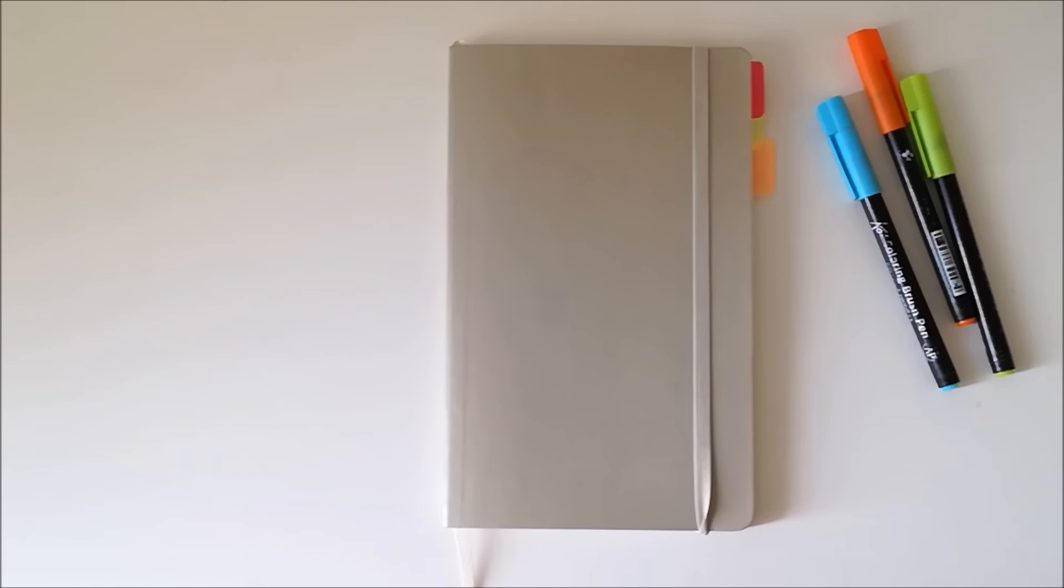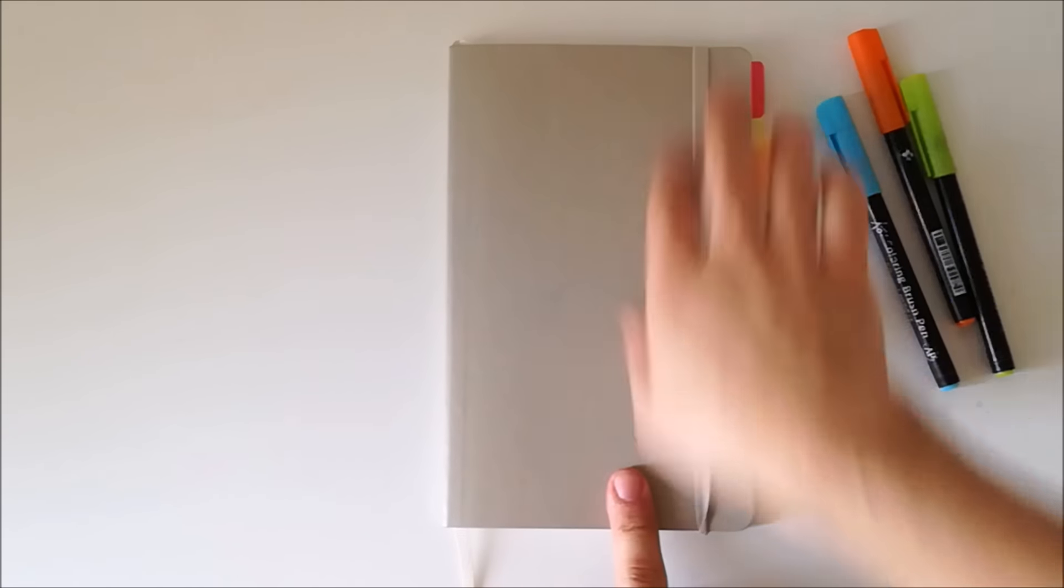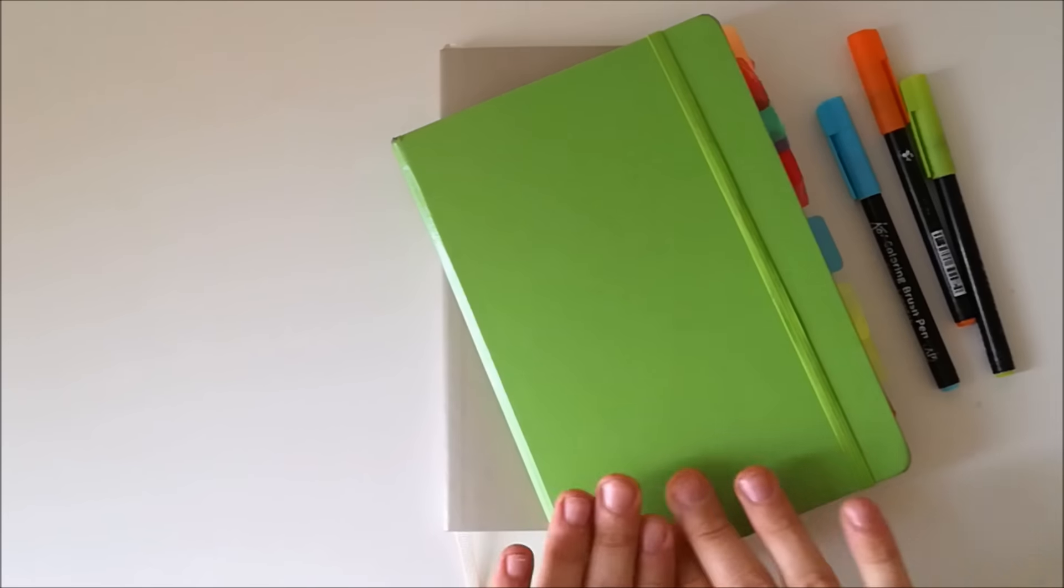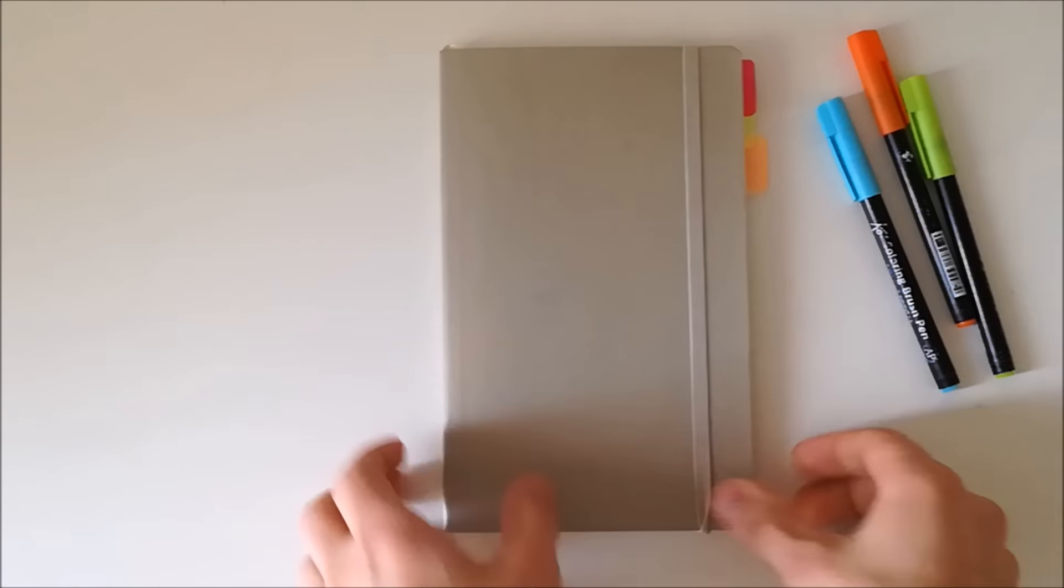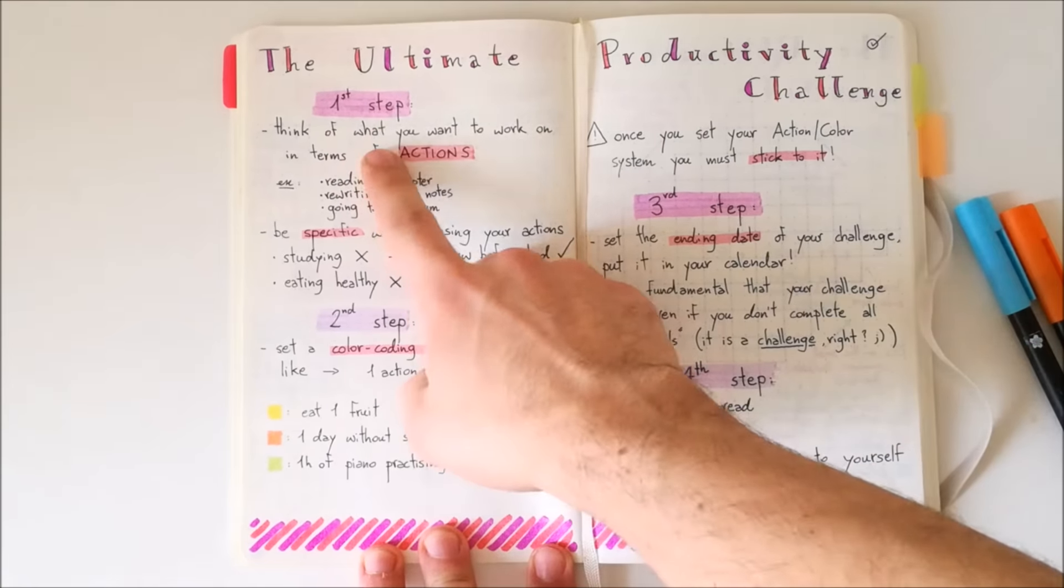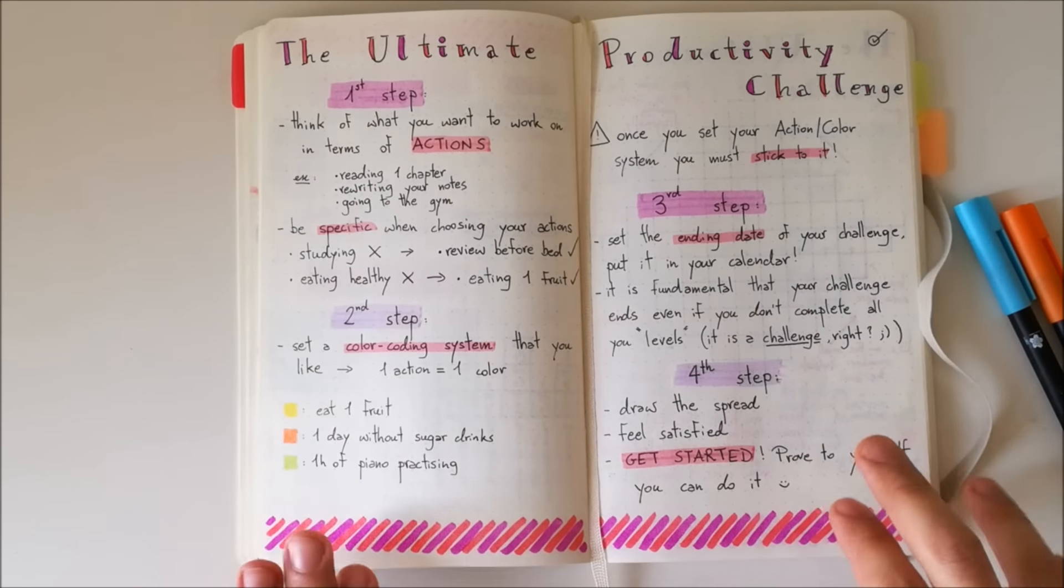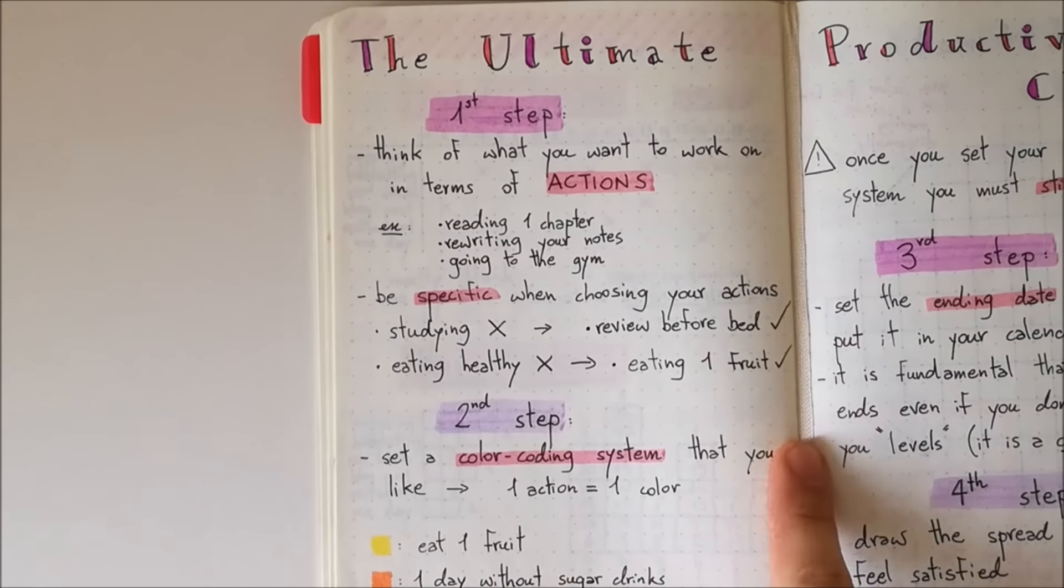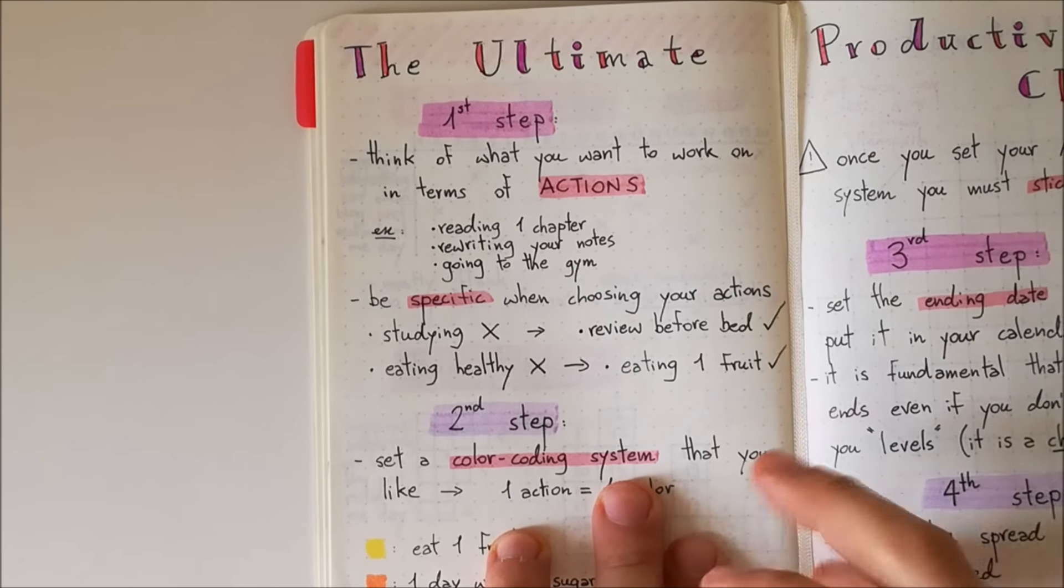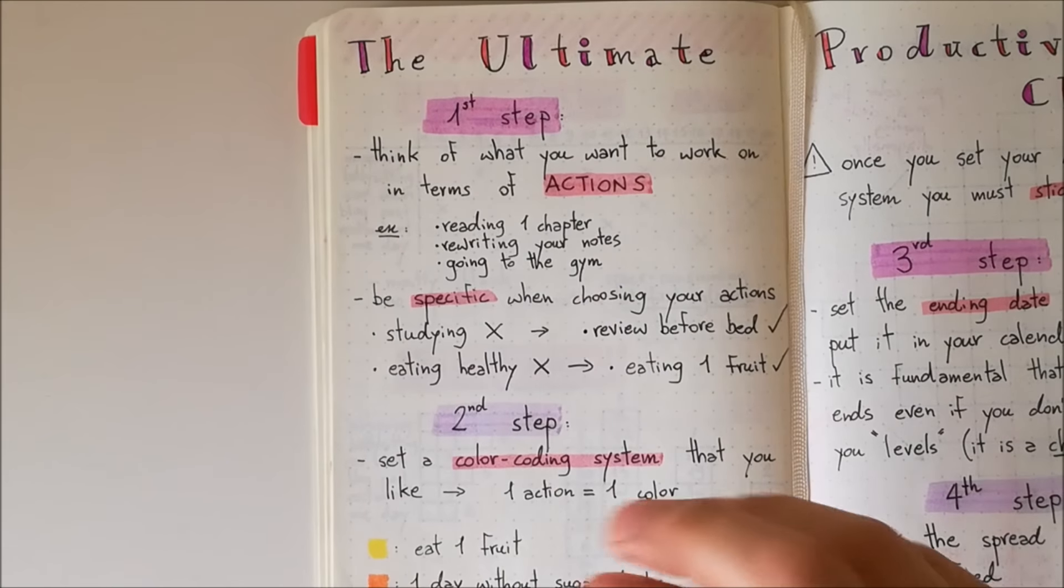Alright guys. So as usual, I'm going to first show you the spread that I have created within my lovely community journal. And then I'm going to show you my ultimate productivity challenge within my own bullet journal. So let's get started. So here's the spread, guys. And I have identified four different steps so that it's easier for you to start your own challenge. Step one is to think of what you want to work on in terms of actions. This is a productivity challenge. So you want to get things done.